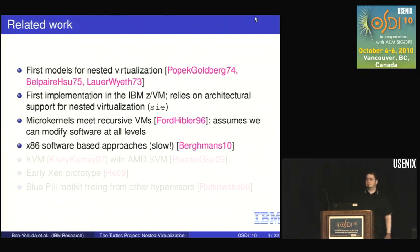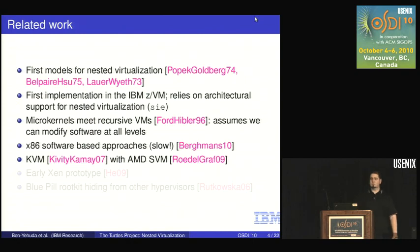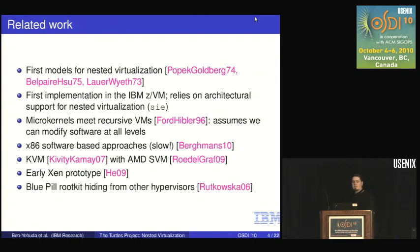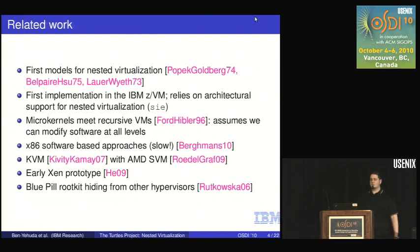What we're trying to do is the same thing without modifying any level except the lowermost hypervisor. There are various software-based approaches to nested virtualization on x86 — for example, Bergman's thesis showed they're all horribly slow. There was concurrent work by Jörg Rodel and Alexander Graf adding nested virtualization support to KVM with AMD's extensions. There is also an early Xen prototype by He, and then there's the BluePill rootkit — the first example of nested virtualization on x86, a hypervisor-level rootkit that ran other hypervisors to avoid detection.